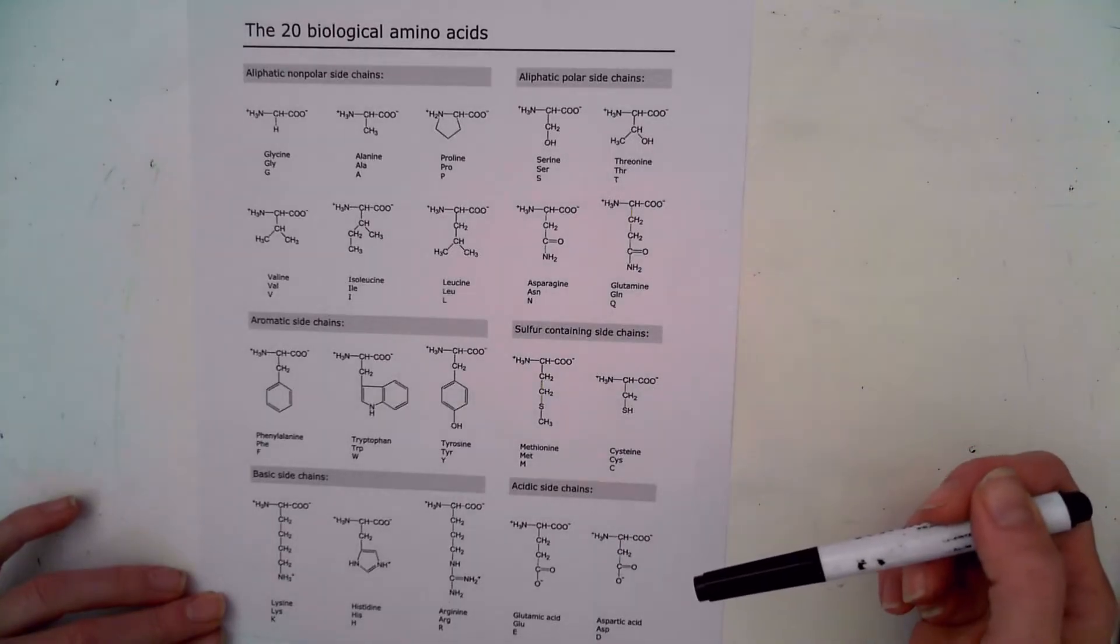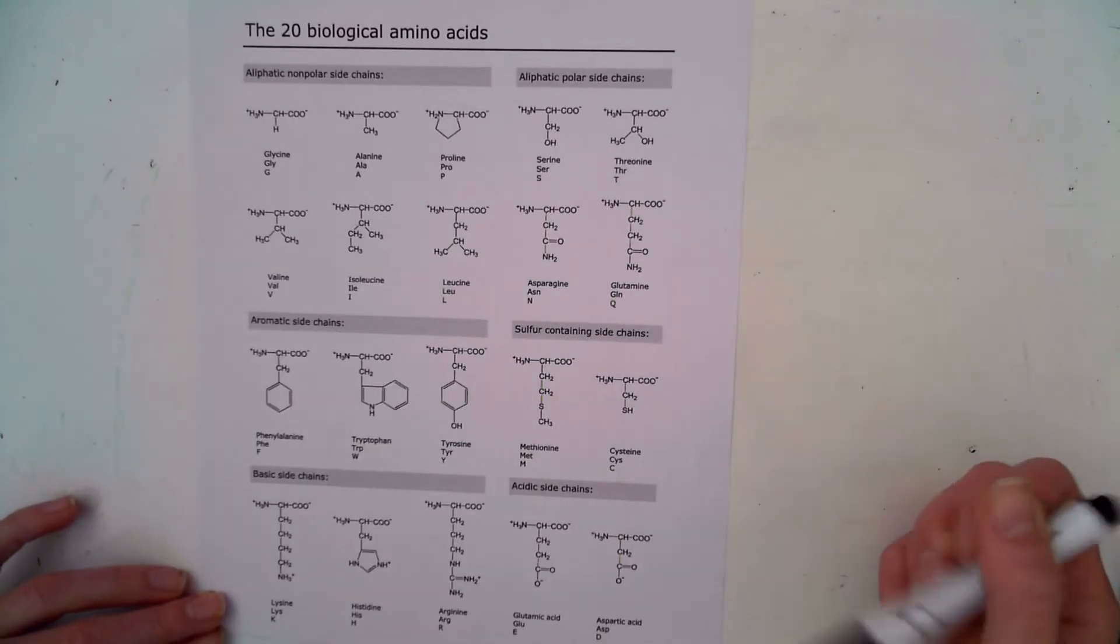However unlike the alphabet most proteins are going to be extremely long words. They're going to be made up of hundreds of amino acids. So it would be a very, very long word.